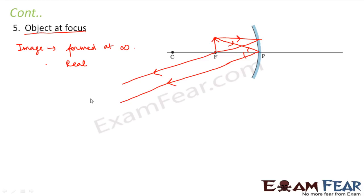The image will be real because even though it is at infinity, no matter how far it goes, it will actually meet. The image will also be inverted because these two rays are going far away, and wherever they meet it will be below the principal axis. There is no possibility that these two rays will suddenly move up and meet somewhere above.